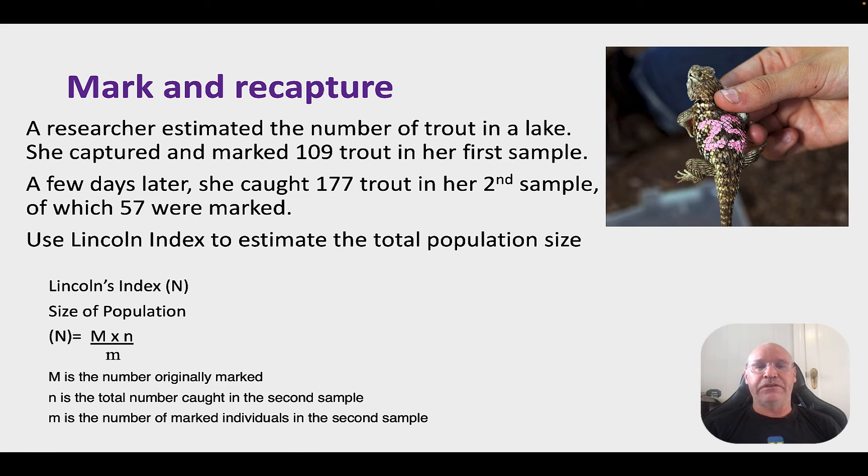So here's an example then. A researcher estimates the number of trout in the lake. She captured and marked 109 trout in the first sample. So that would be capital M. A few days later she caught 177, that would be lowercase n of which 57 were marked. That's the lowercase m. So we put those into Lincoln's index and we get an estimated population of 338. So that's the easy part. The calculation is the easy part. But obviously the more difficult part is doing the capturing and marking.